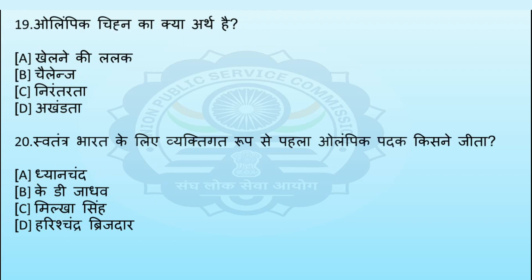अगला प्रश्न: Olympic चिन्ह का क्या अर्थ है? Option A: खेलने की ललक, Option B: चैलेंज, Option C: निरंतरता, Option D: अखंडता। इस प्रश्न का सही उत्तर Option C – निरंतरता है।